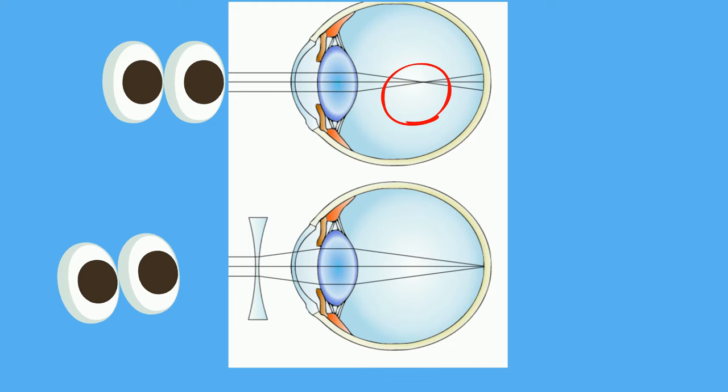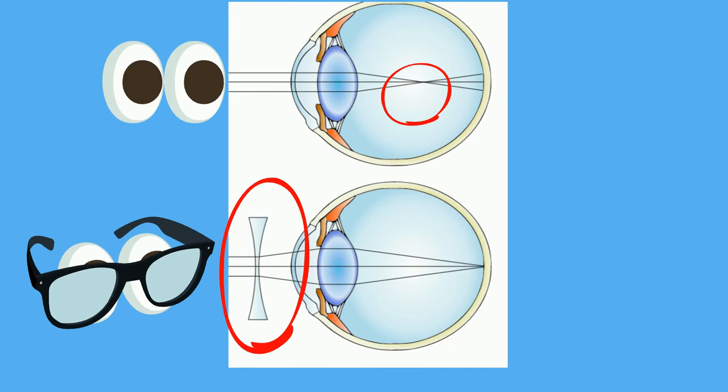To correct nearsightedness, a person can wear glasses with concave lenses. A concave lens, also called a diverging lens, is a lens that is thicker at the edges than in the center.